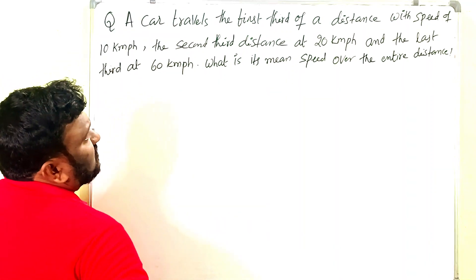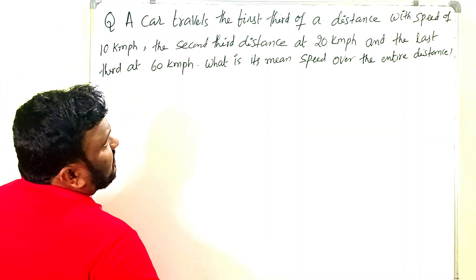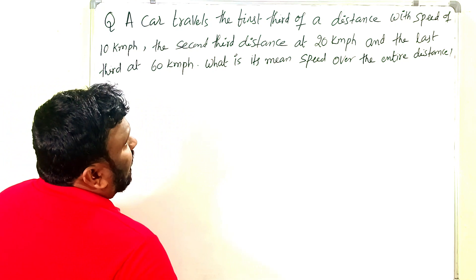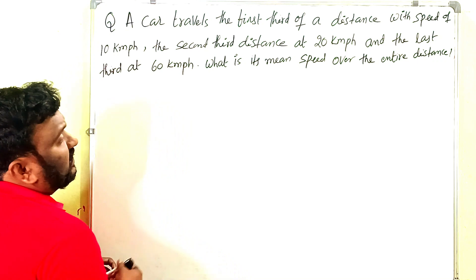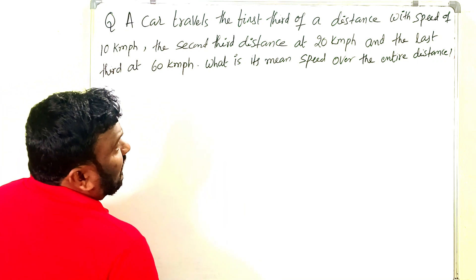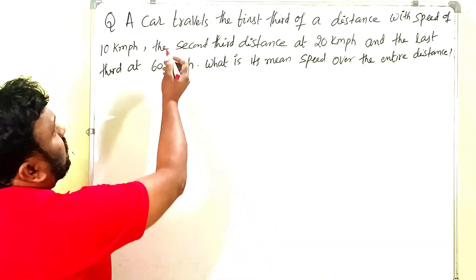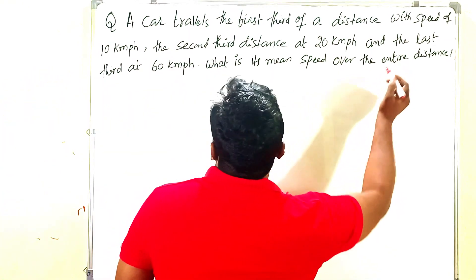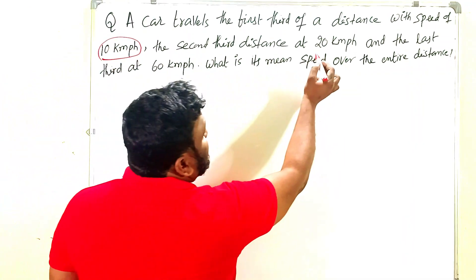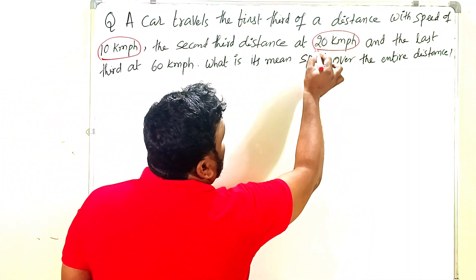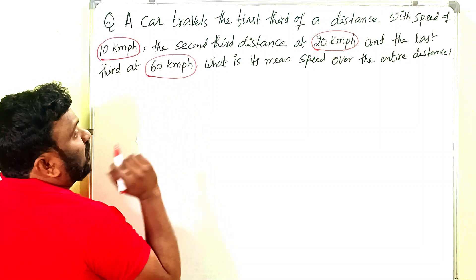Here is the problem: A car travels the first third of a distance with a speed of 10 kmph, the second third of the distance at 20 kmph, and the last third at 60 kmph. What is the mean speed over the entire distance? Let's read once again: first third at 10 kmph, second third at 20 kmph, and the last one at 60 kmph.